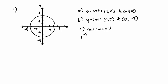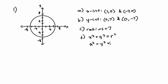And then for d, we have to write the equation of the circle. We know that the equation of any circle is x-squared plus y-squared equals r-squared, r being the radius. The radius is 7, so we have x-squared plus y-squared equals 7-squared, which equals 49. Therefore, the equation of this circle is x-squared plus y-squared equals 49.